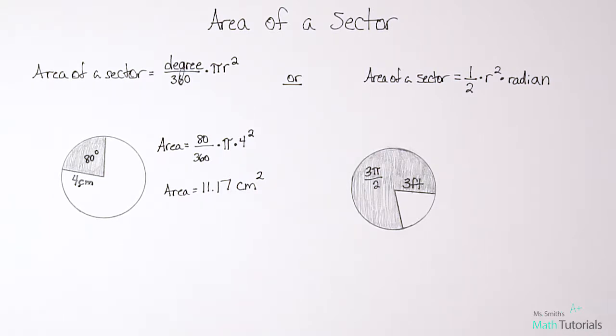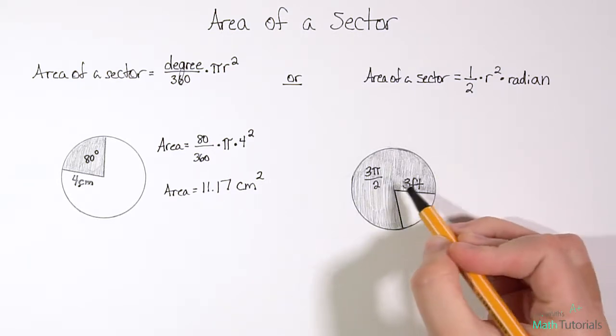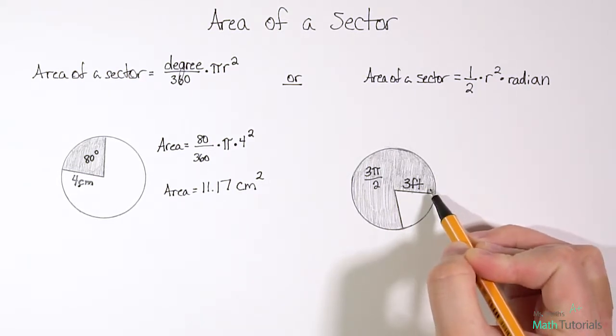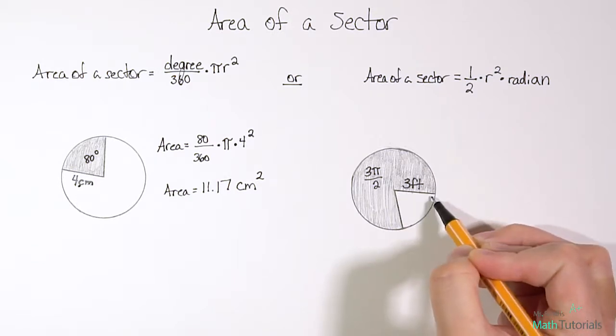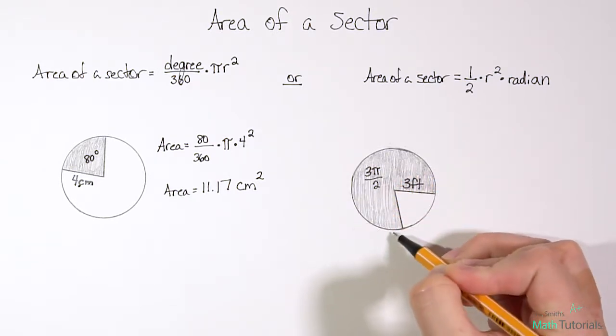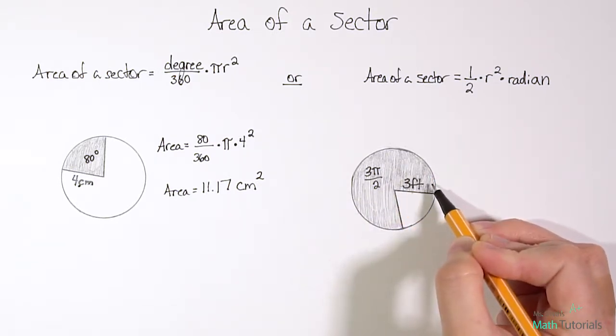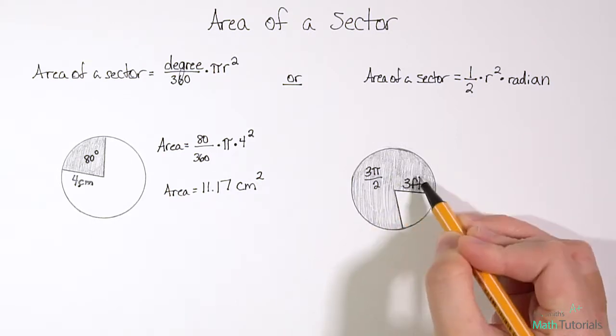Okay, let's find the area of a sector when we've been given a radian measurement. So notice this one. Now we're wanting to find not the little small pie piece, but rather this whole shaded area of the circle, right? This sector right here.